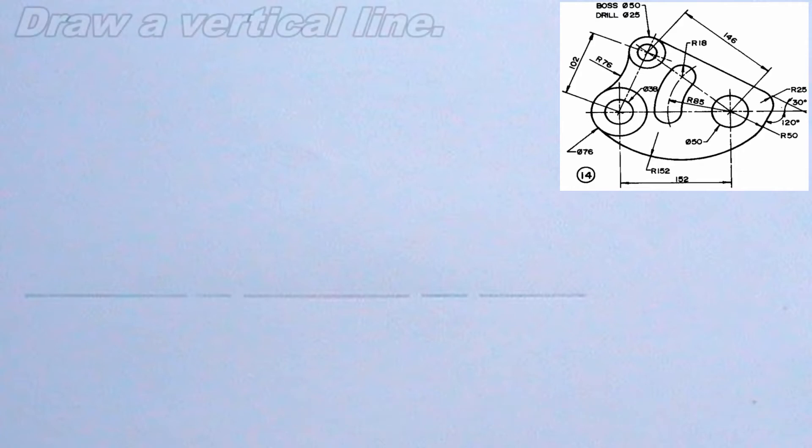To draw the tang in C problem, the first step is to draw a horizontal line. I have already done this step — I drew a horizontal line of length 160mm. The next thing I will do is to draw a vertical line. The vertical line should be at least 19mm from the left end of the horizontal line.